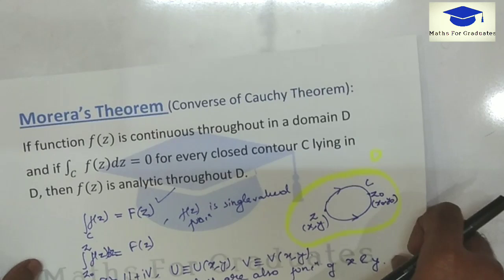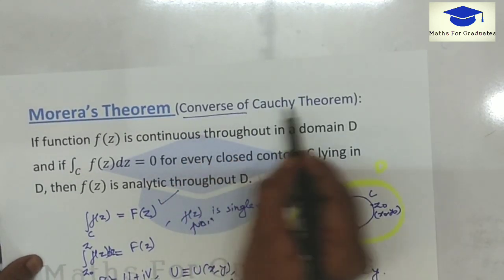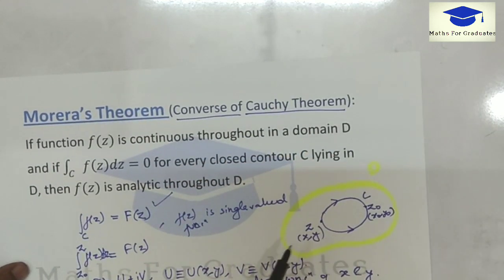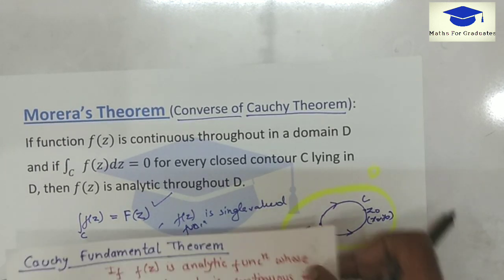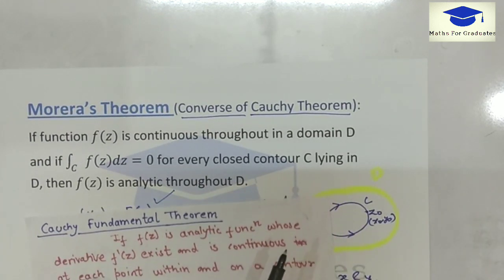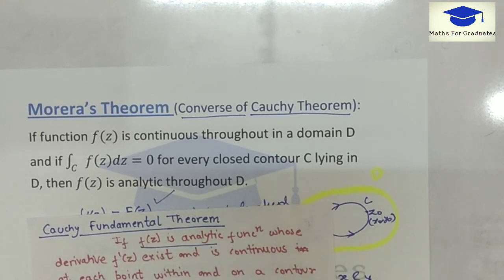Now in addition, Morera's theorem is also known as the converse of Cauchy's theorem. What is Cauchy's theorem? According to Cauchy's theorem, if function f(z) is analytic inside a contour or within or on the boundary of the contour, then their integral is 0.